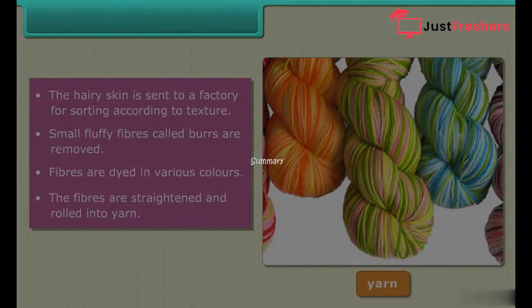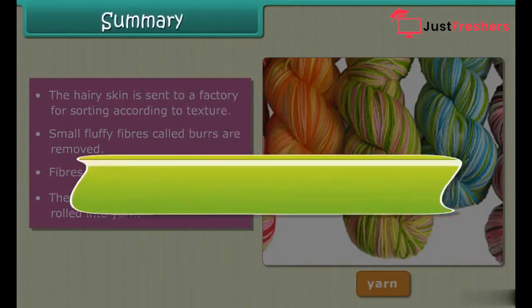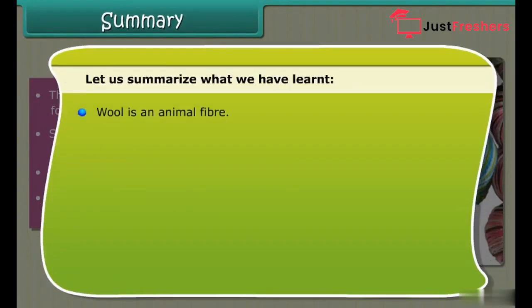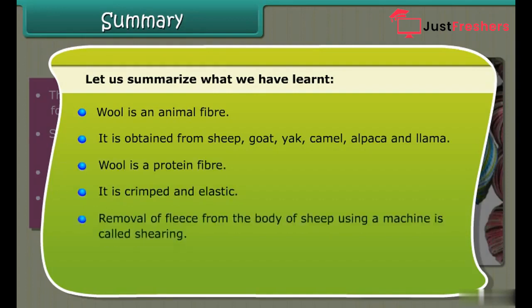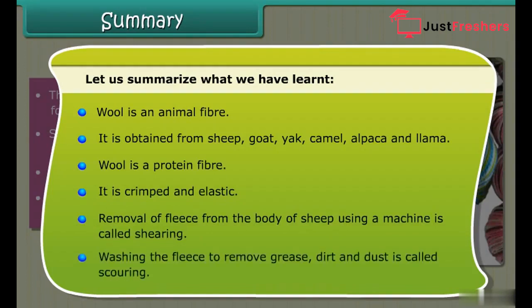Summary: Wool is an animal fiber obtained from sheep, goat, yak, camel, alpaca, and llama. It is a protein fiber that is crimped and elastic. Removal of fleece from the body of a sheep using a machine is called shearing. Washing the fleece to remove grease, dirt, and dust is called scouring.